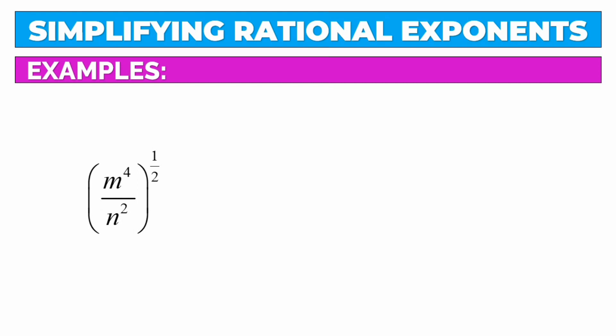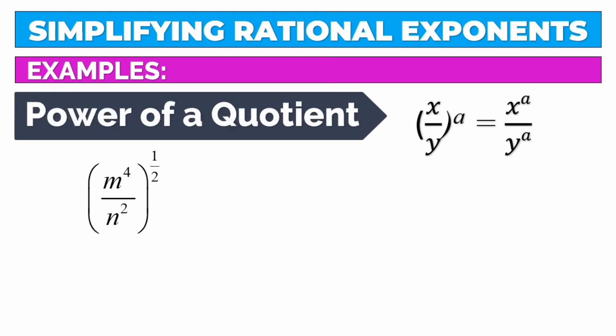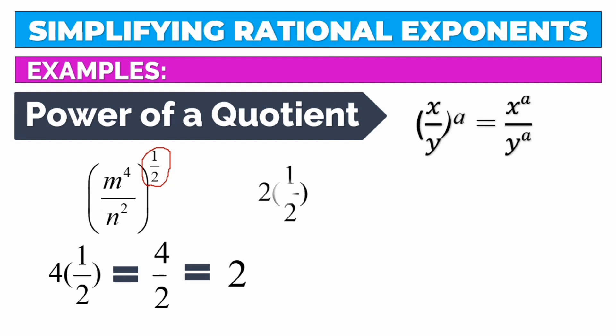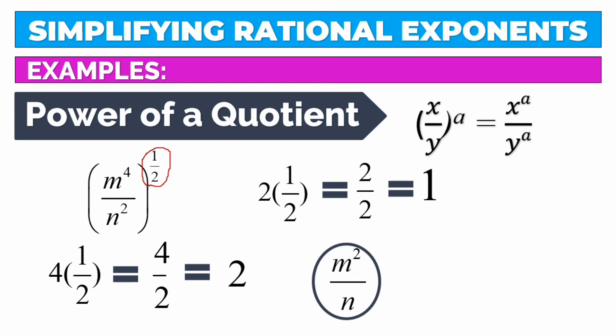Next example: m raised to 4 over n raised to 2, then raised to 1 half. We apply the power of a quotient — we multiply 1 half to each exponent. 4 times 1 half is 4 over 2, which equals 2. 2 times 1 half is 2 over 2, which simplifies to 1. Our final answer is m raised to 2 over n. We don't need to write 1 as the exponent.